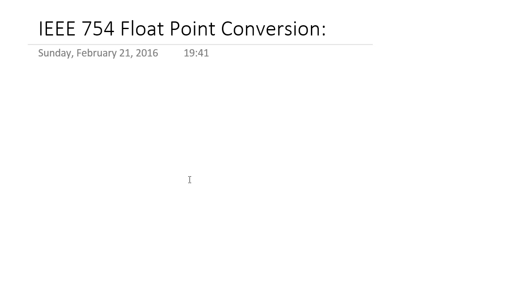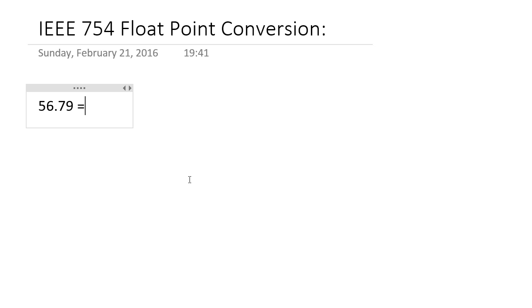Hello guys, I'm going to show you how to convert a decimal floating point number, say 56.79, to a binary number that is in the IEEE 754 floating point standard.